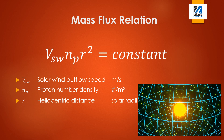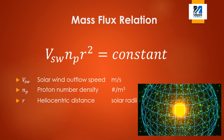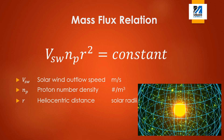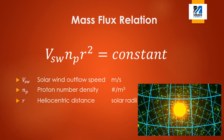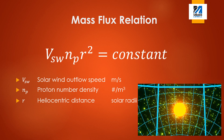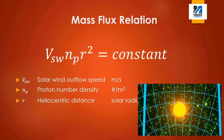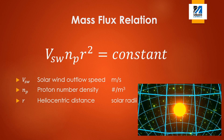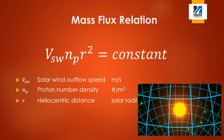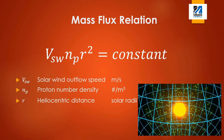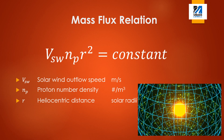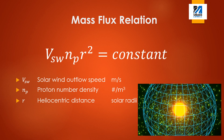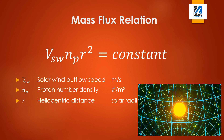Mass flux is a foundational concept in Parker's theory. For the solar wind, it represents the number of particles emitted from the sun per unit time. The solar wind mass flux is given by the equation VSW times NP times R squared equals constant, and has units of particles per second.